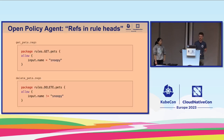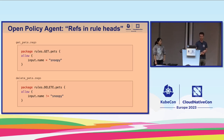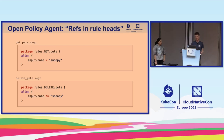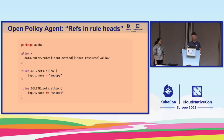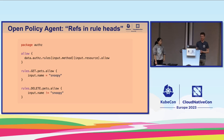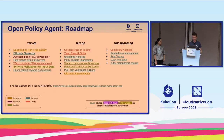Refs in rule heads — it's not a particularly catchy name but it's what we've gone with. You might want to define policy where the input method might be GET or POST against a particular resource and use information from the context of the request to dig into different policies. Previously you needed to define packages in separate files — rules.get.pets and rules.delete.pets in a separate file. It's now possible to provide all of that policy in one file using dots in rule heads.